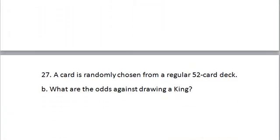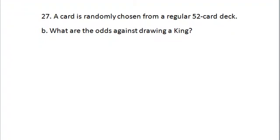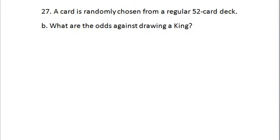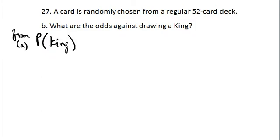Second question related to this same situation: a card is randomly drawn again from a regular 52-card deck. What are the odds against drawing a king? We've already found from part A that the probability of drawing a king from a well-shuffled deck is four out of 52, which reduces to one out of 13. But now they're asking about odds.